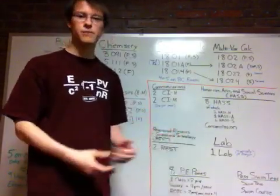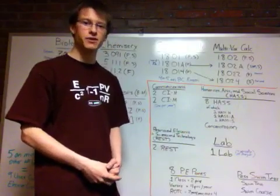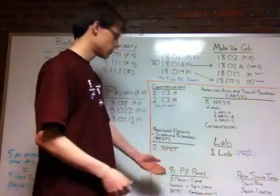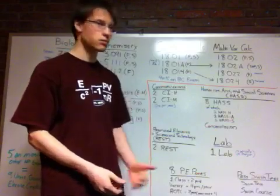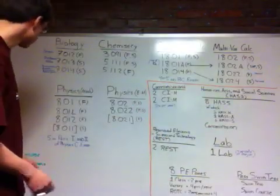And finally, there is the swim test requirement. Basically, you need to pass a swim test or you need to satisfactorily complete a swim course, which is a PE course. And once you complete all that, you're good. This is what you need to graduate from MIT.